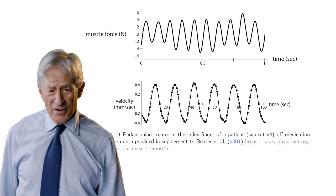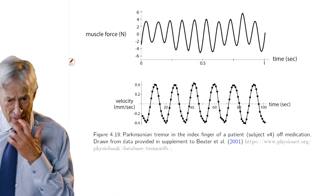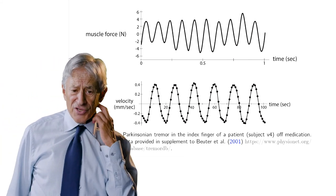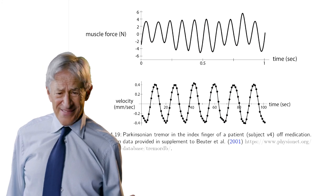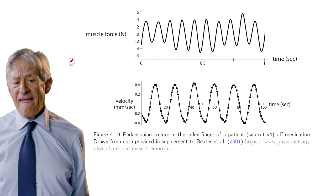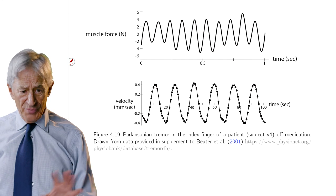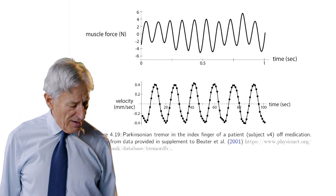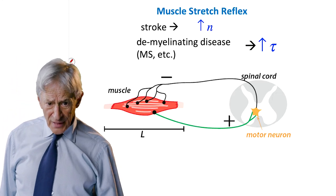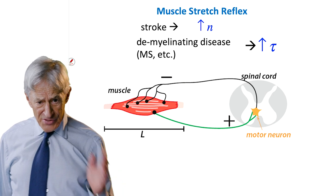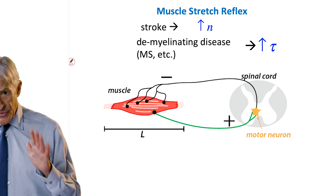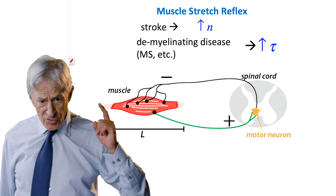There are other oscillations, for example, Parkinsonian tremor, whose origin is not really well known, and which need to be examined using mathematical models. But the key is that the stroke mechanism increases N, and a demyelinating disease increases tau.